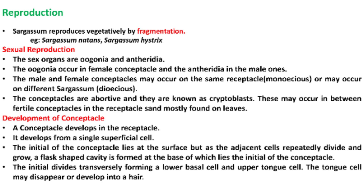Sexual reproduction. The sex organs are oogonia and antheridia. The oogonia occur in female conceptacles and the antheridia in the male ones. The male and female conceptacles may occur on the same receptacle, that is monoecious, or may occur on different Sargassum plants, that is dioecious. The conceptacles that are abortive are known as cryptoblasts. These may occur in between fertile conceptacles in the receptacle and are mostly found on leaves.